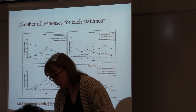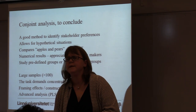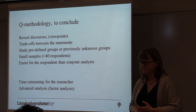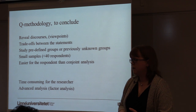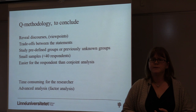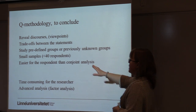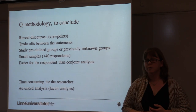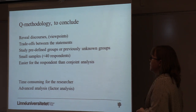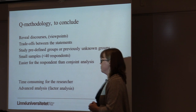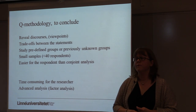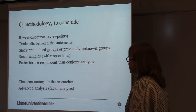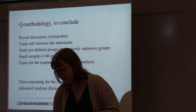These are two methods I've used to identify stakeholder preferences. To conclude: Q methodology, compared to conjoint analysis, produces viewpoints or discourses instead of numerical results. We still have trade-offs between statements and can study predefined groups or find previously unknown groups. It takes smaller samples and is easier for respondents. However, it is time-consuming for researchers since every person needs to be visited in person — you have to bring the cards physically.